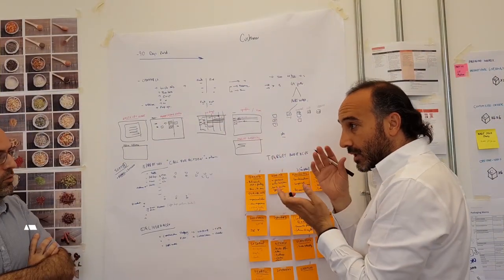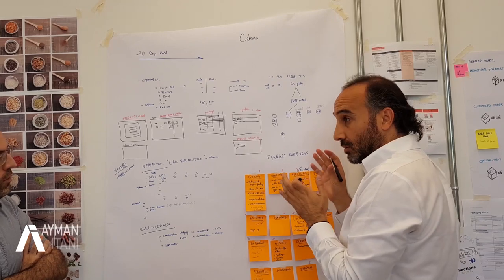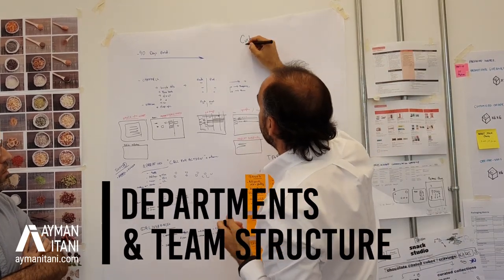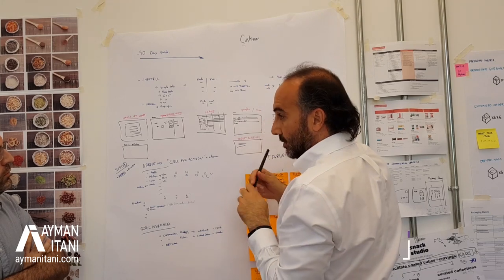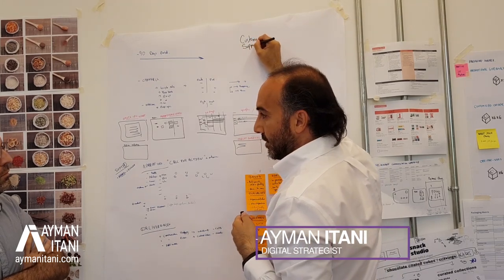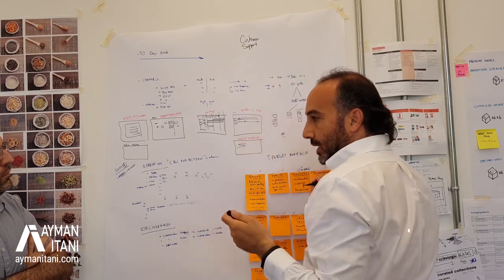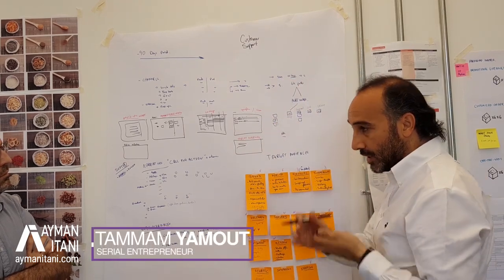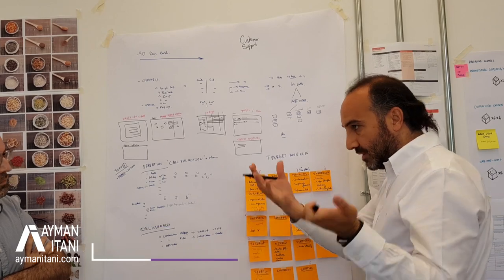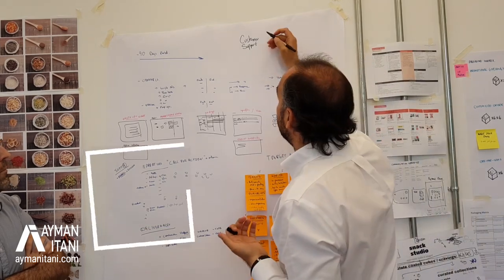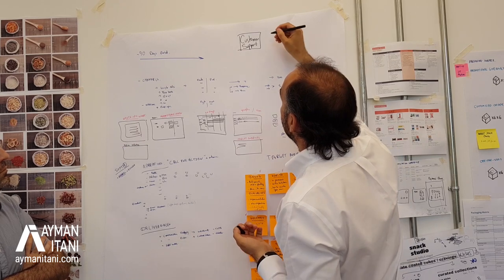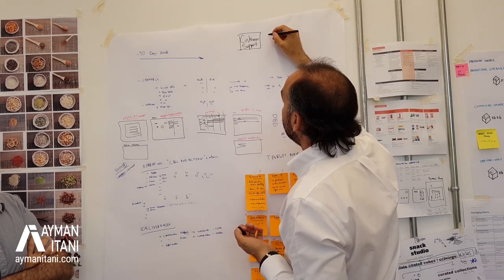Let's talk business functions first and then we'll talk people, because we're going to mix business functions together. Customer support is a big deal — I was double billed, where's my product, it's been two days and you said one day, I got the wrong order, it melted. So you have the customer support aspect and there's a lot to handle there.